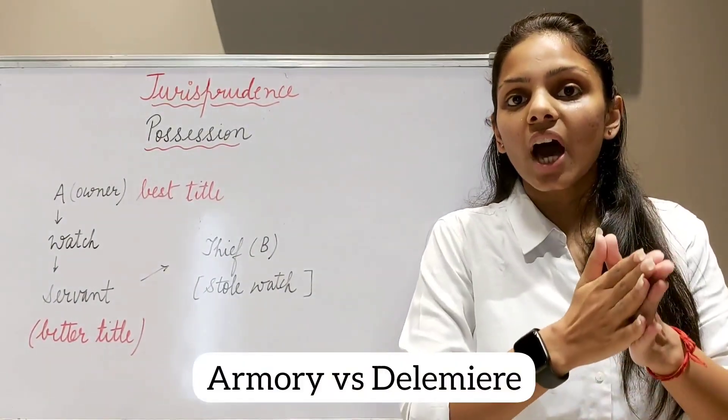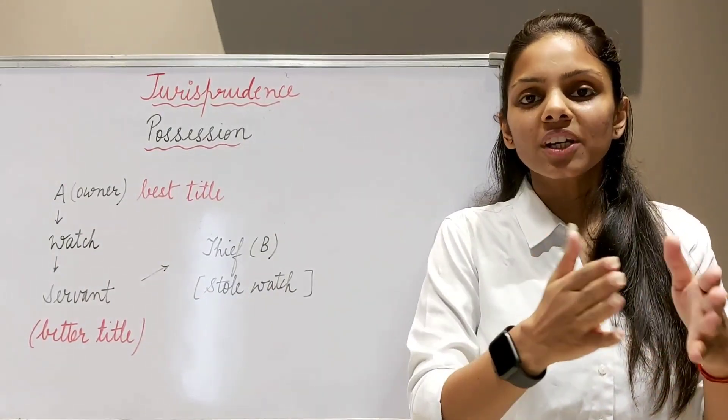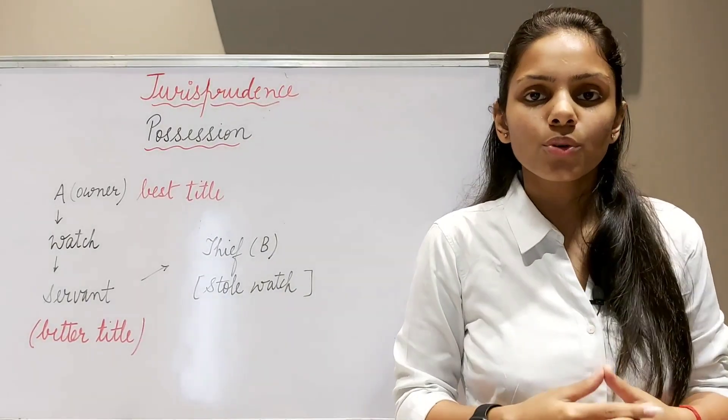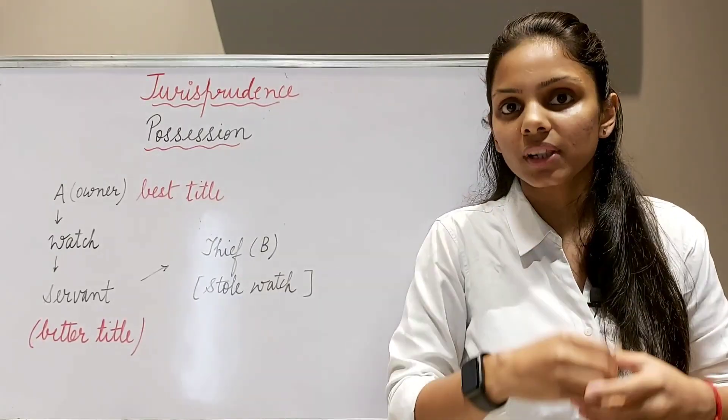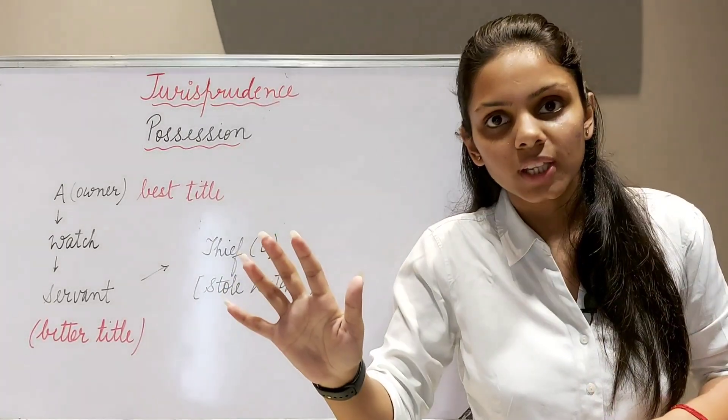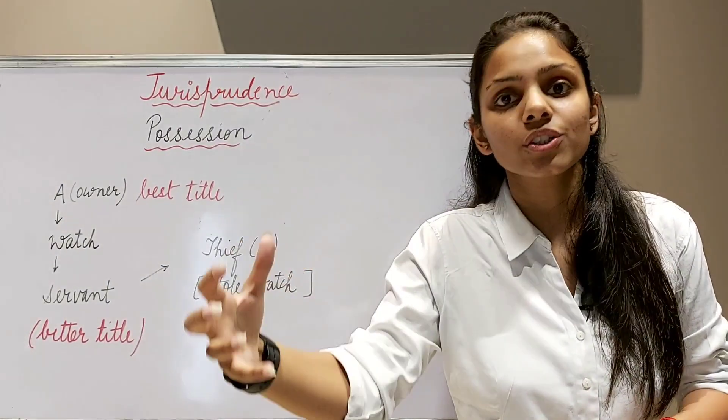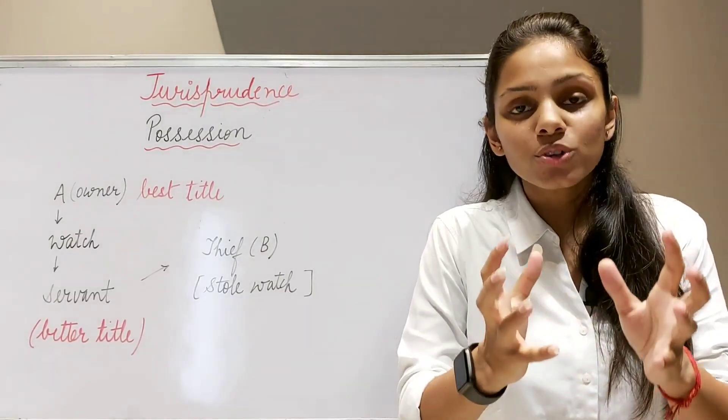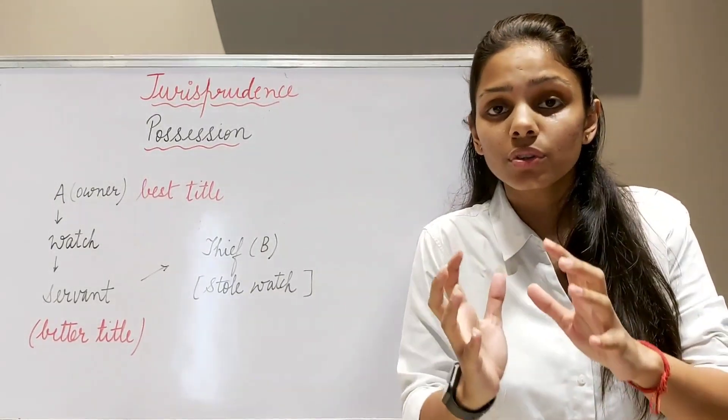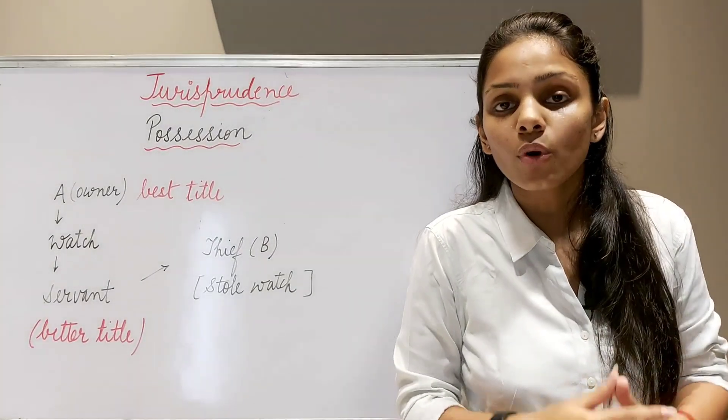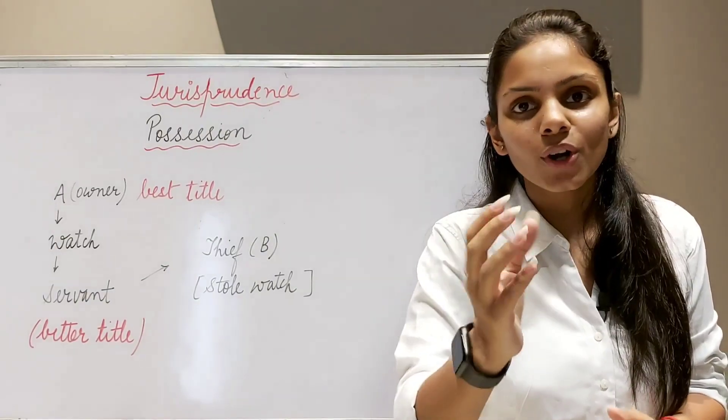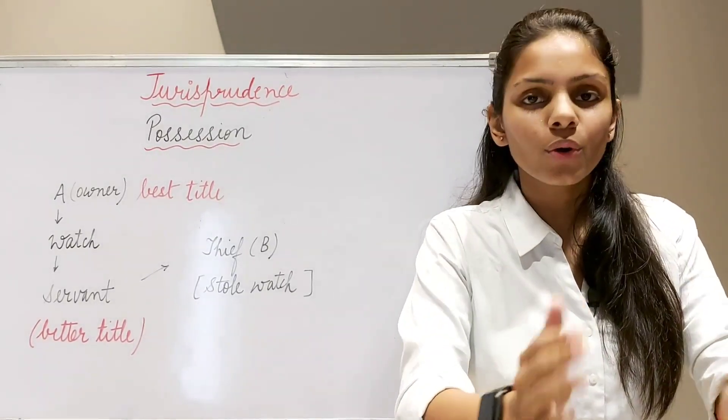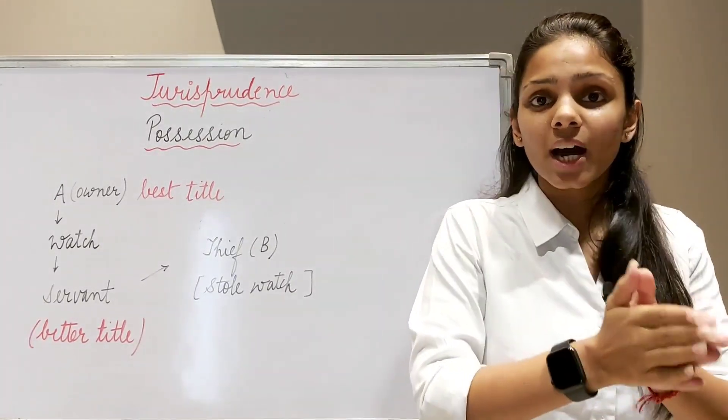Which is called Armory vs Delamere. This is popularly called the chimney sweeper's case. The facts are very similar with this illustration. In this case, there was a plaintiff, plaintiff was a chimney cleaner. He, while he was cleaning a chimney, found a jewel. He took that jewel and gave it to a goldsmith and asked the goldsmith to please ascertain its value because I want to sell this in the market and get money. Now here the goldsmith kept that jewel with himself and he refused to return that jewel back to the plaintiff or to the chimney cleaner. And he said that neither are you the owner, you also found it while cleaning the chimney. Who is the owner of this jewel, we do not know. Neither am I the owner nor are you the owner. Therefore I will not give you this jewel.